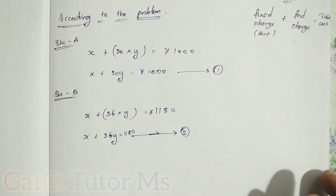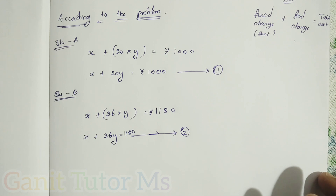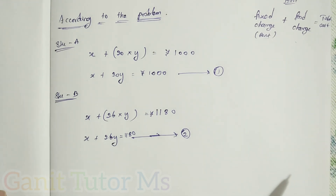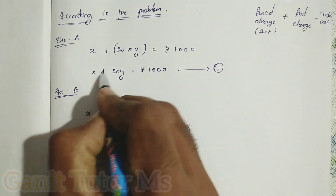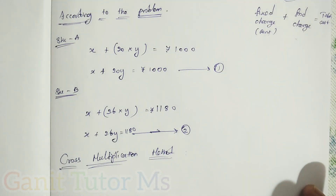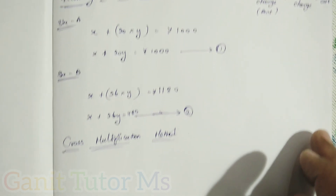Now we have found the pair of linear equations. We can solve this by any algebraic method. Since we are well-versed in elimination and substitution methods, in this chapter we will go with the cross multiplication method. Before entering the cross multiplication method, we rearrange the terms so that the left-hand side has only variables and constants, and the right-hand side is equal to zero.